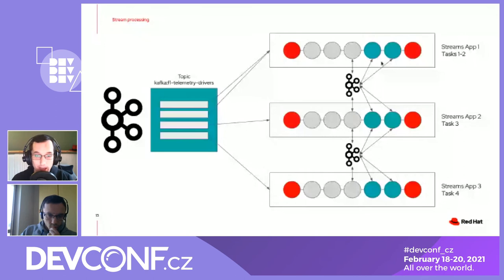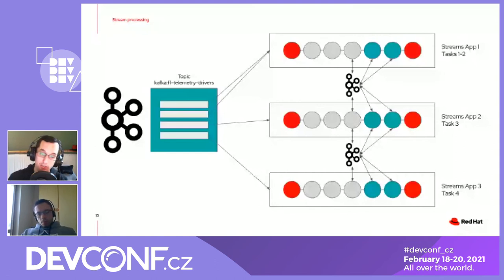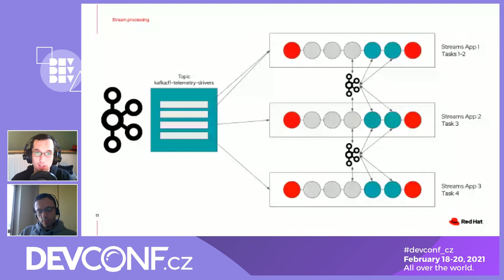When you start new instances, each is a new member of the consumer group, and the client API rebalances available partitions between available applications. The key concern in stream processing is state — the windows and KTables. Because each task is already partitioning that state internally, when it backs up to the Kafka cluster, the state is already separate. So if you split from one instance into three, tasks can go to the particular partition changelog topic on startup, recover their state, and resume processing. This provides a straightforward way to scale up or down with fault tolerance built in.